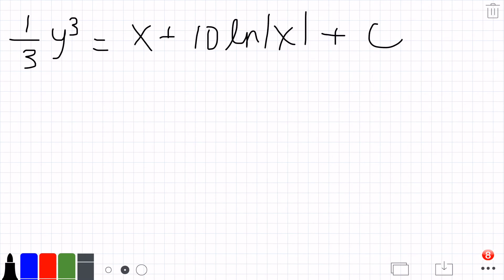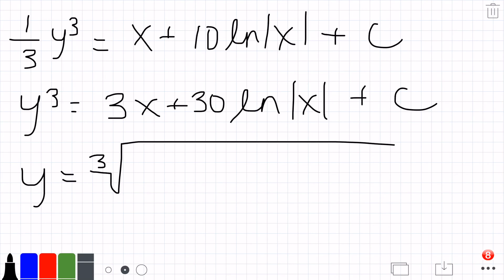Now we want to solve for y. y³ = 3x + 30 ln|x| + C. Then we just take the cube root of the whole thing: y = ³√(3x + 30 ln|x| + C).